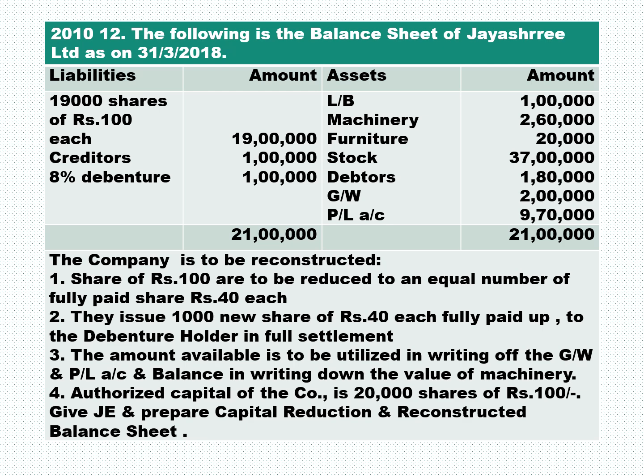Re-reading the balance sheet of Jayshree Limited as on 31/3/18: we have 19,000 shares of rupees 100 each — 19 lakh. Since the class of share is not specified, we assume it is equity share. Creditors: 1 lakh, debentures: 1 lakh. Asset side includes land and building, machinery, furniture, stock, debtors, followed by goodwill and P&L account, which have to be written off out of the capital reduction account.